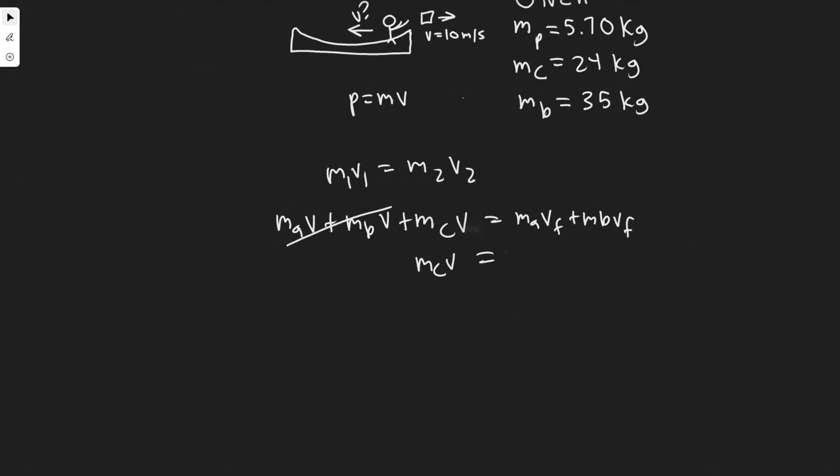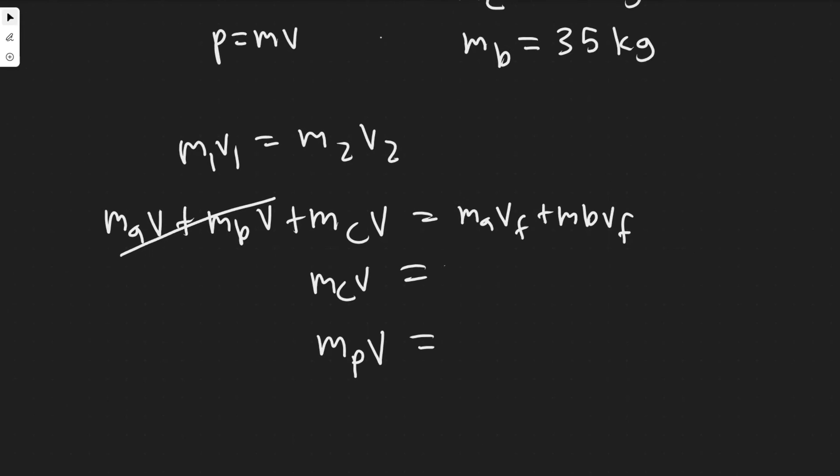So the momentum of the package, mP times v, is equal to the mass of the boy and the boat. So this is the child and then this is the boat. mC plus mB, because they're one thing, times their velocity whatever that is, and I'll call it v final.